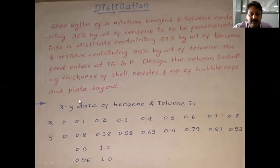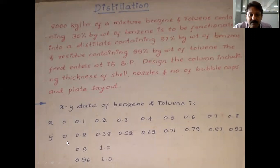We have taken xy data from Perry's Handbook for benzene and toluene. This data is not directly tabulated, so refer to the benzene-toluene equilibrium curve diagram. We locate x values and calculate the corresponding y values from 0.1, 0.2, 0.3 up to 1.0, so the values of y are calculated from the diagram.